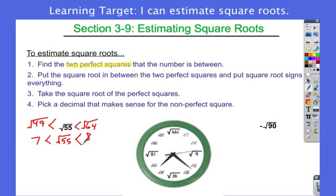Notice where I got those numbers 7 and 8. I just took the square root of those numbers. So this is going to be 7 point something. To do this, to get a good estimate, I'm going to do a little trick here.